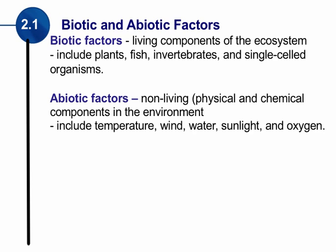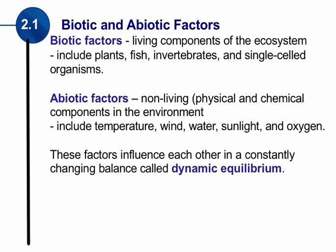Biotic and abiotic factors are always working together and may be changing as well. These factors influence each other, and this constant change is what we call a dynamic equilibrium. So there might be more water, or less sunlight, or more fish, or less plants — and we call this the dynamic equilibrium: the constantly changing balance within an ecosystem.